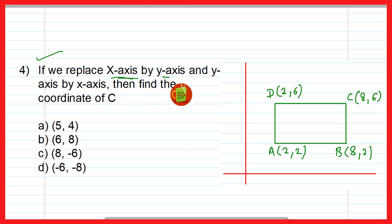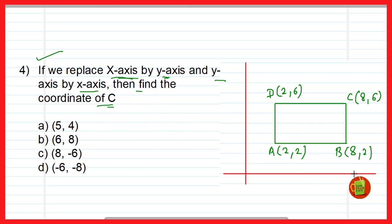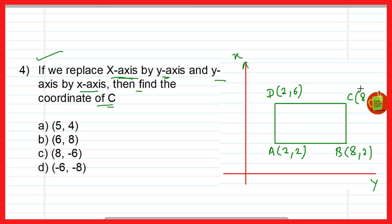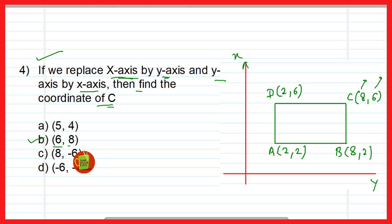Now this next question is very interesting: if we replace the x-axis by the y-axis and the y-axis by the x-axis, find the coordinates of C. When we swap the axes, the x-coordinate is the distance from the y-axis and the y-coordinate is the distance from the x-axis, so these distances get reversed. Therefore the correct option is B, that is (6, 8), and the coordinates of C become (6, 8).